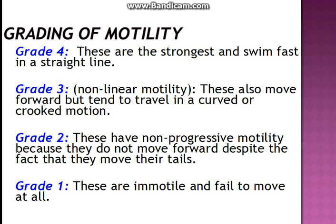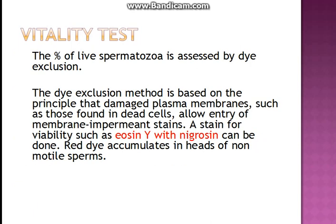Grade 2 has a non-progressive motility — that means they do not move forward at all, but they do move their tails. Grade 1 means the sperms are immotile and they fail to move at all.